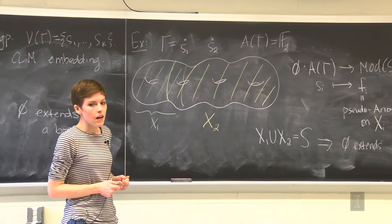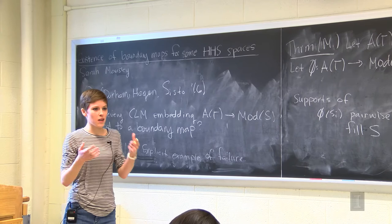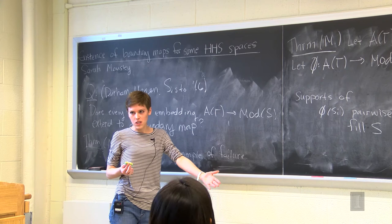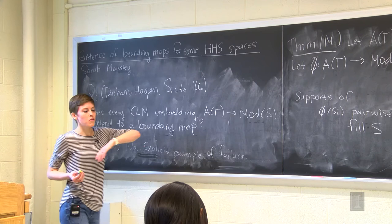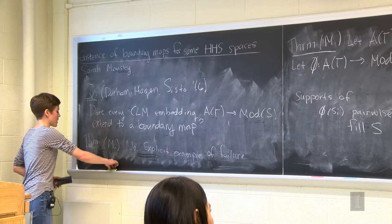The boundary here is the HHS boundary, not the PML boundary. This raises an important clarification: I haven't told you what notion of boundary is at play. The only boundary we've discussed is the Gromov boundary, but the mapping class group isn't Gromov hyperbolic — it has copies of Z² all over the place — and unless I'm working with a free group, the RAAG isn't Gromov hyperbolic either. So I need a different notion of boundary, called the hierarchically hyperbolic space boundary.